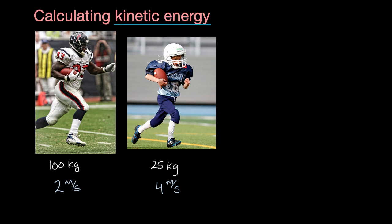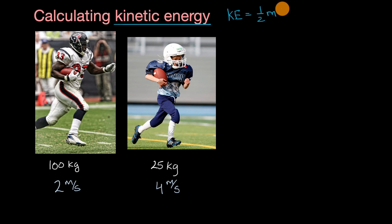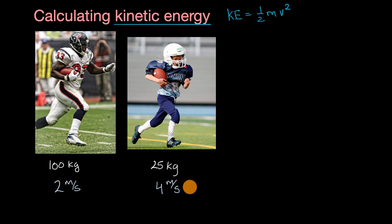All right, now let's think about this together. I'm first going to give you the formula for kinetic energy, and then we are going to derive it. The formula for kinetic energy is that it's equal to one half times the mass of the object times the magnitude of its velocity squared — or another way to think about it, its speed squared. Given this formula, pause the video and see if you can calculate the kinetic energy for each of these running backs.